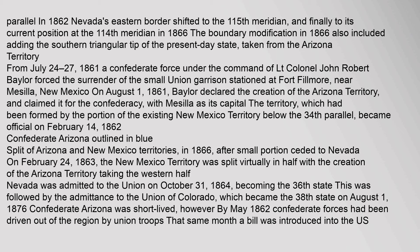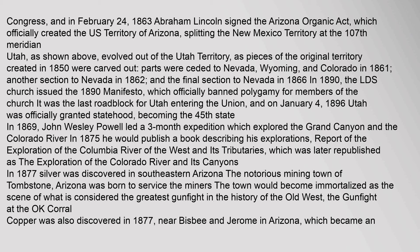Colorado became the 38th state on August 1, 1876. Confederate Arizona was short-lived; by May 1862, Confederate forces had been driven out of the region by Union troops. That same month the bill was introduced into U.S. Congress, and on February 24, 1863, Abraham Lincoln signed the Arizona Organic Act, which officially created the U.S. Territory of Arizona, splitting the New Mexico Territory at the 107th Meridian. Utah evolved out of the Utah Territory as pieces of the original territory created in 1850 were carved out. In 1890, the LDS Church issued the 1890 Manifesto, which officially banned polygamy for members of the church — it was the last roadblock for Utah entering the Union. On January 4, 1896, Utah was officially granted statehood, becoming the 45th state. In 1869, John Wesley Powell led a three-month expedition exploring the Grand Canyon and the Colorado River. In 1875, he published a report of the exploration of the Colorado River of the West and its tributaries, later republished as the exploration of the Colorado River and its canyons.